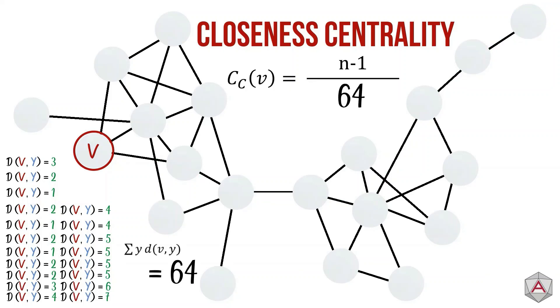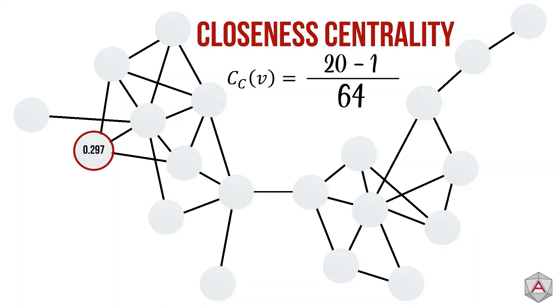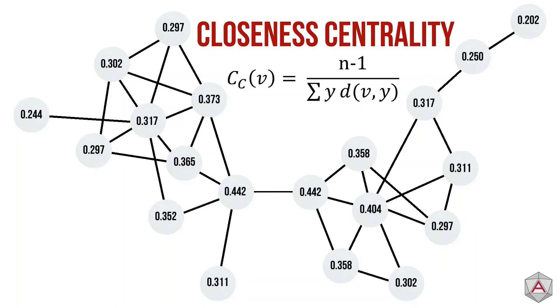Now, if we add all of these together and substitute this back into our equation, we get our closeness centrality measure for our node, where N is the number of nodes in the network. Now, let's again apply this to the whole graph. A high closeness centrality score indicates that the node is best placed to influence the network as quickly as possible.